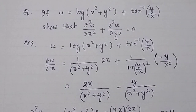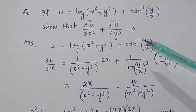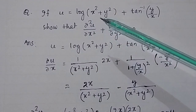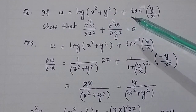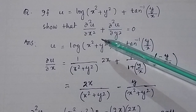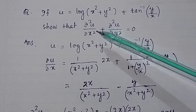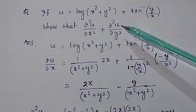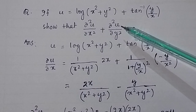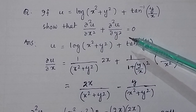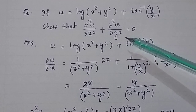In this video we will discuss partial derivatives of higher orders. The given function is u = log(x² + y²) + tan⁻¹(y/x), and we have to show that the second order partial derivative with respect to x plus the second order partial derivative of u with respect to y is equal to 0. This is the Laplace equation in two dimensions.